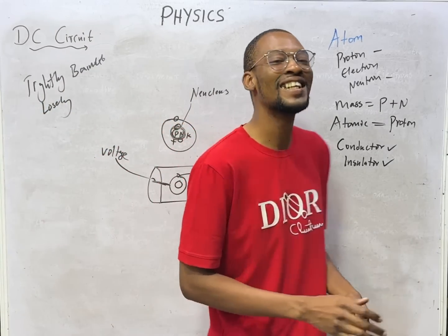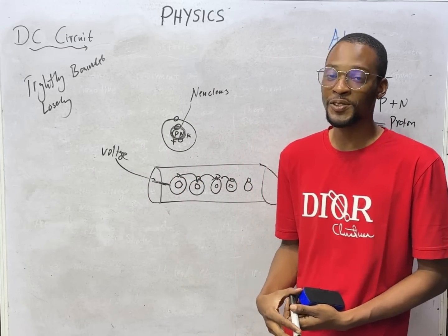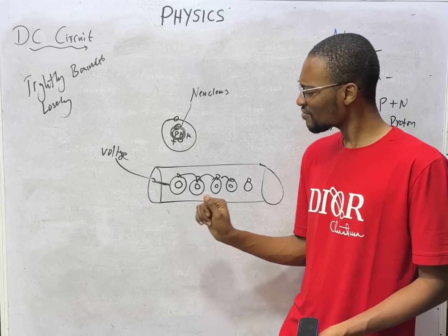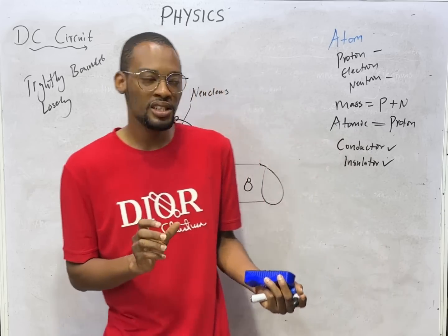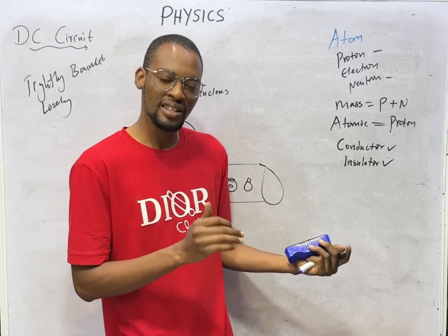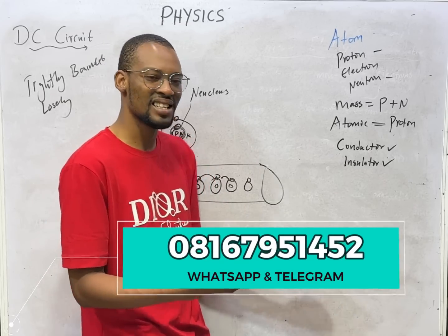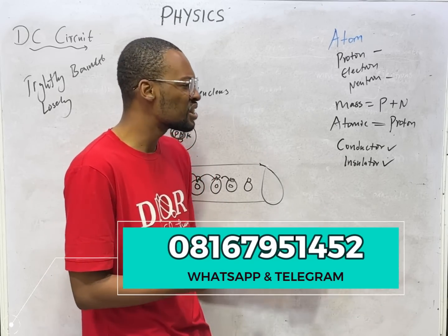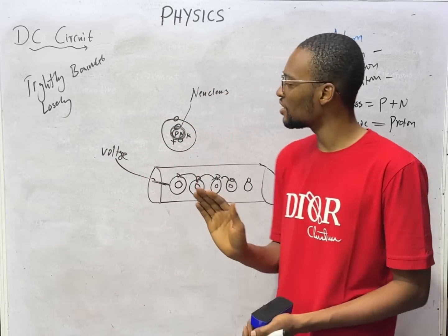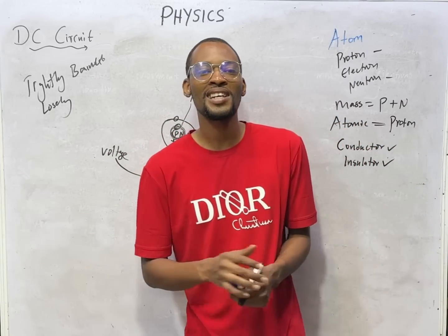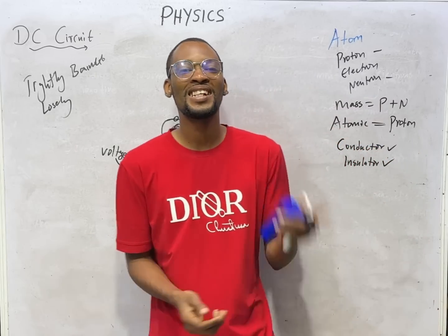We have come to the end of this introduction to DC circuits and current electricity. In the next episode, we shall look at important themes such as EMF, voltage, potential difference, resistance, resistors, resistivity, and everything else you need to know. Get the Flash Learners application and see you in the next episode.